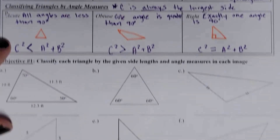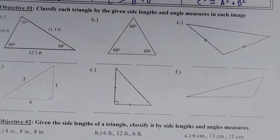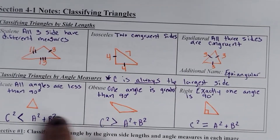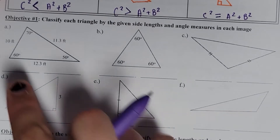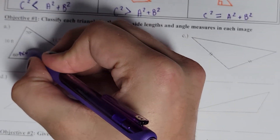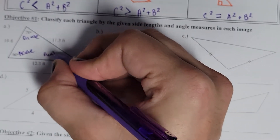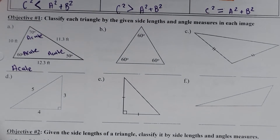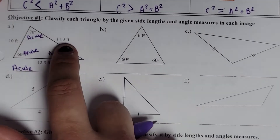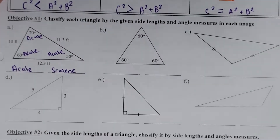Objective one gives us six pictures and says: identify and classify each triangle by its given side lengths and angle measures. We've got to make sure we put two answers — one from the angle classification and one from the sides. I always start with angles first. I noticed that 60 degrees is less than 90 — acute; 70 degrees is less than 90 — acute; and 50 degrees is less than 90 — acute. Since all three are acute, this is an acute triangle. The sides are 10 feet, 12.3 feet, and 11.3 feet — all different — so it's scalene. Answer: acute scalene.